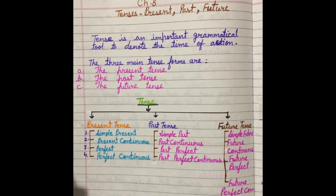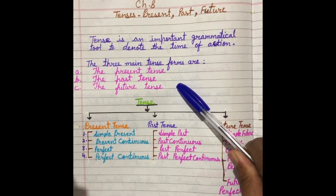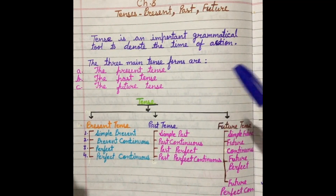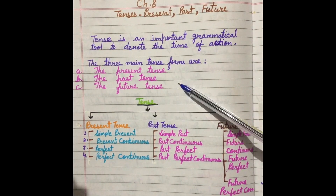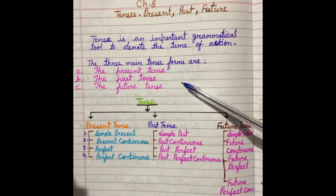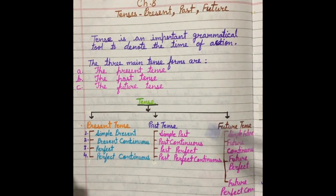Present tense means वर्तमानकाल, जो present समय को denote करेगा. Past tense, जो बीत चुका है, भूतकाल. The future tense means जो आने वाला time है, भविष्यकाल.